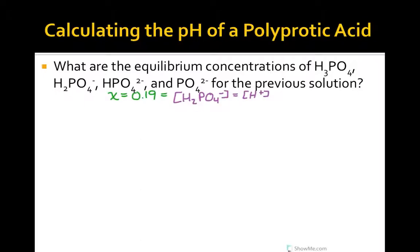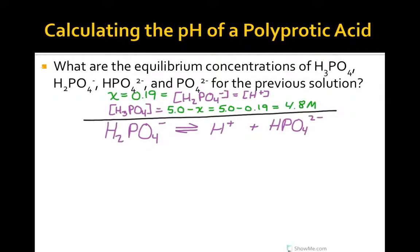From the previous problem, we learned that the hydrogen ion and dihydrogen phosphate ion concentrations were 0.19 molar. We can subtract the extent of the reaction from the initial phosphoric acid molecule concentration to get its equilibrium concentration, 4.8 molar. To determine the hydrogen phosphate concentration, we need to look at the dissociation equilibrium for the second step of this three-step process.